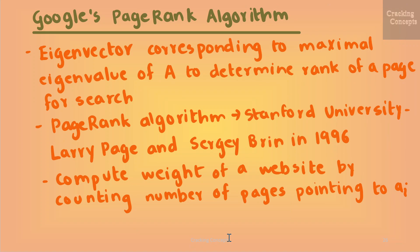Google's PageRank algorithm visualizes web pages as eigenvectors. Google uses the eigenvector corresponding to the maximal eigenvalue of a matrix A to determine the rank of a page for search. The idea for the PageRank algorithm, developed at Stanford University by Larry Page and Sergey Brin in 1996, was that the importance of any web page can be approximated by the importance of pages that link to it. They write down all websites as a huge directed graph showing which page links to which. PageRank computes the weight or importance of a website A_i by counting the number of pages pointing to it and taking into account the importance of those linking websites. The navigation behavior of a user is then modeled by a transition matrix A of this graph that tells us the probability of somebody ending up on a different website.